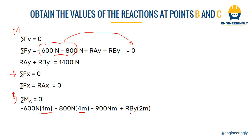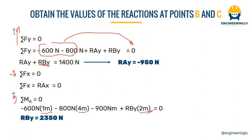Finally, we have the reaction at point B with a moment arm of two meters. The summation of these moments equals zero. From here we can obtain the reaction at point A in the y direction to be minus 950 Newtons. This means that the initial direction we assumed for the reaction at point A in the positive y direction was incorrect, and the force actually acts in the negative y direction.